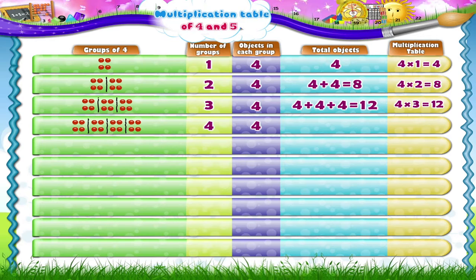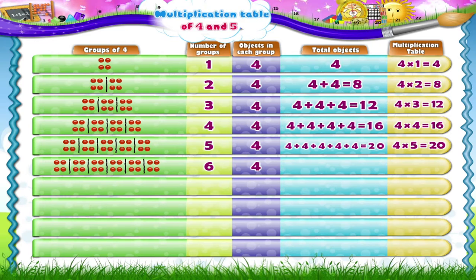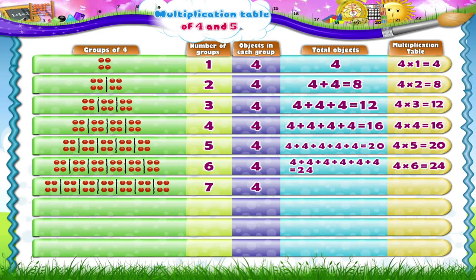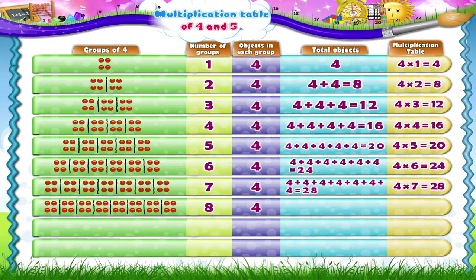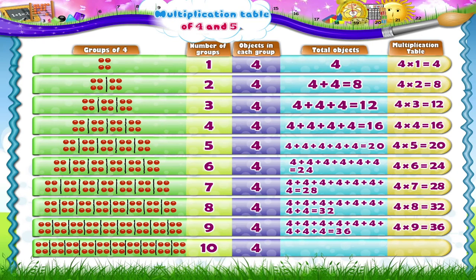4 beads taken 4 times make a total of 16 beads. 4 beads taken 5 times make a total of 20 beads. 4 beads taken 6 times make a total of 24 beads. 4 beads taken 7 times make a total of 28 beads. 4 beads taken 8 times make a total of 32 beads. 4 beads taken 9 times make a total of 36 beads. 4 beads taken 10 times make a total of 40 beads.